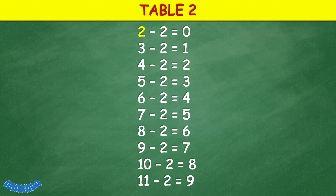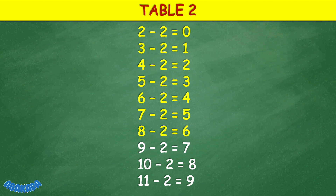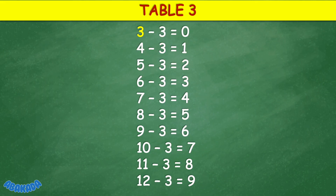Table 2: 2 minus 2 equals 0, 3 minus 2 equals 1, 4 minus 2 equals 2, 5 minus 2 equals 3, 6 minus 2 equals 4, 7 minus 2 equals 5, 8 minus 2 equals 6, 9 minus 2 equals 7, 10 minus 2 equals 8, 11 minus 2 equals 9.